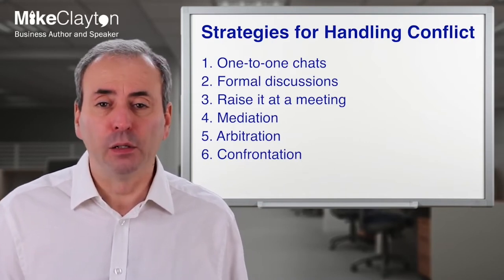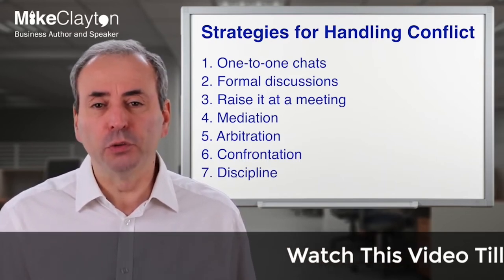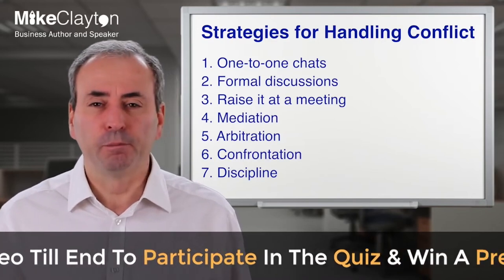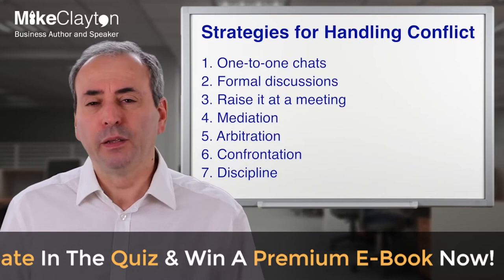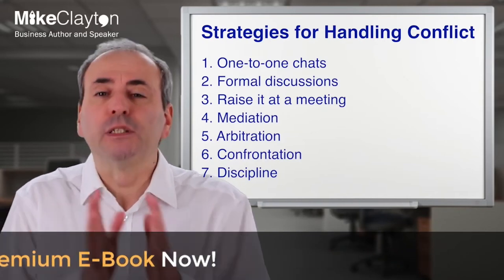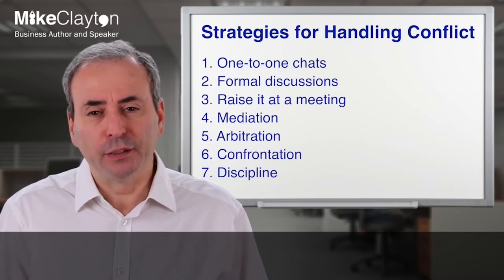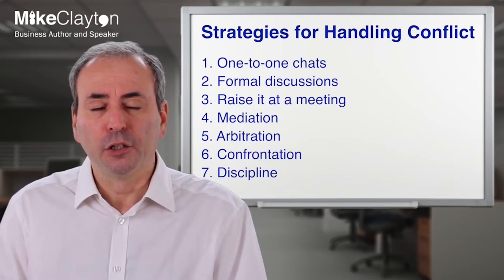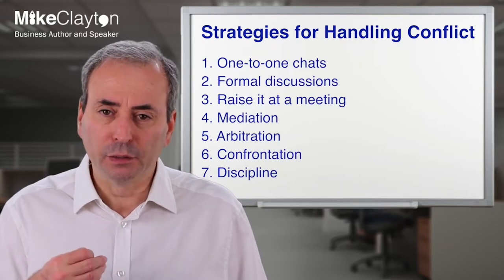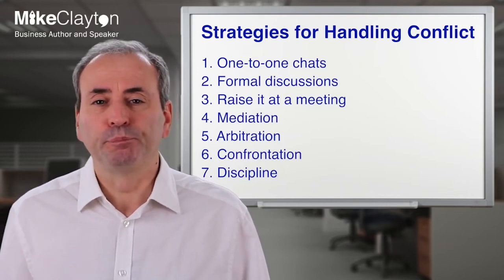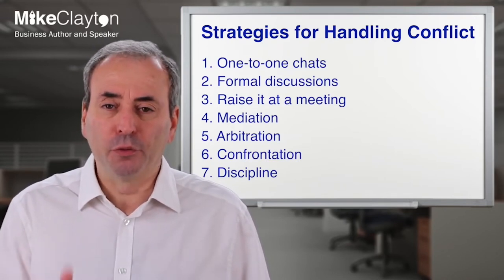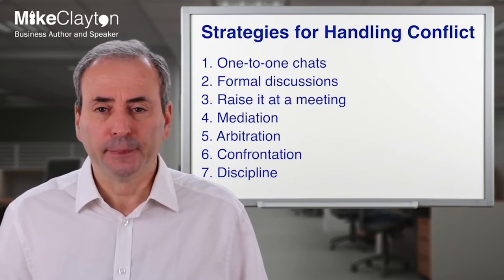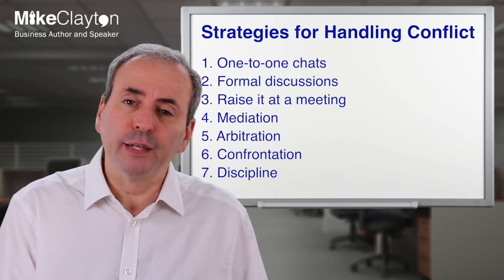The seventh strategy can only be used when you have the power in the situation, and that is to apply discipline — to apply whatever external rules there are to impose a resolution. You need to be sure you're right because this is the ultimate solution and there's no going back. Separate your use of authority and discipline for resolving the conflict from using it to punish — think twice before punishing anyone in a workplace situation because the consequences are severe. However, if you can apply discipline to resolve the situation, sometimes that needs to be done to make progress quickly.